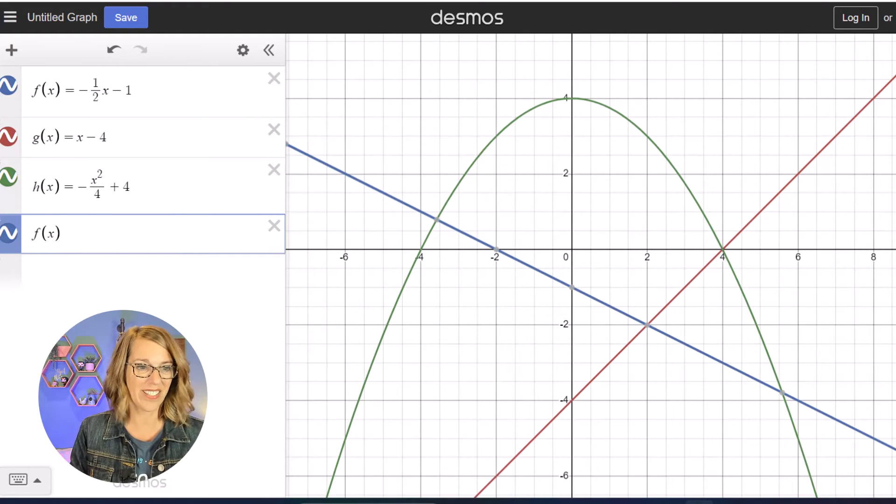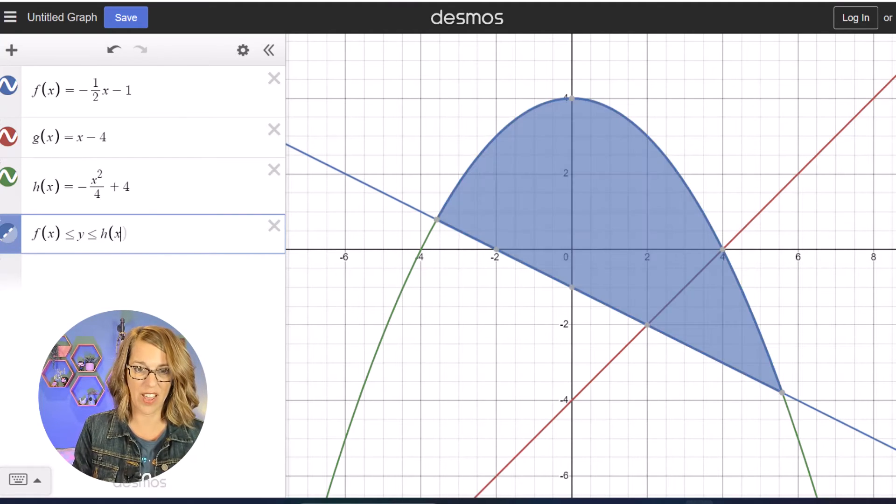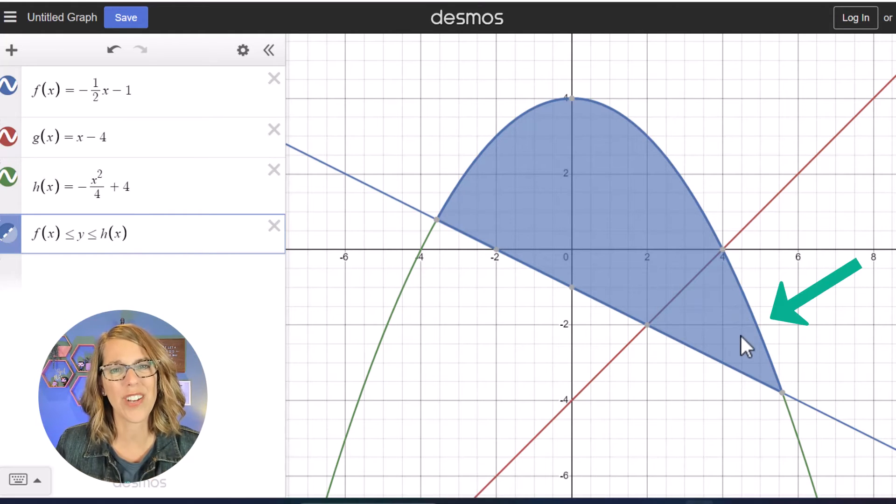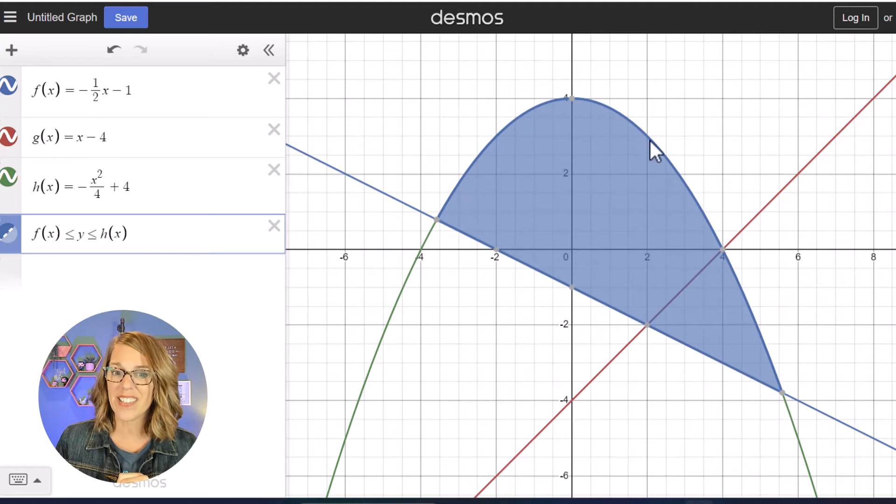So I've got F of X. Let's do less than or equal to Y less than or equal to H of X. Now I'm almost there but I don't want this little triangular piece over here. If I click on this point I see that I've got the point 2 comma negative 2. I actually want to cut this off at 2.